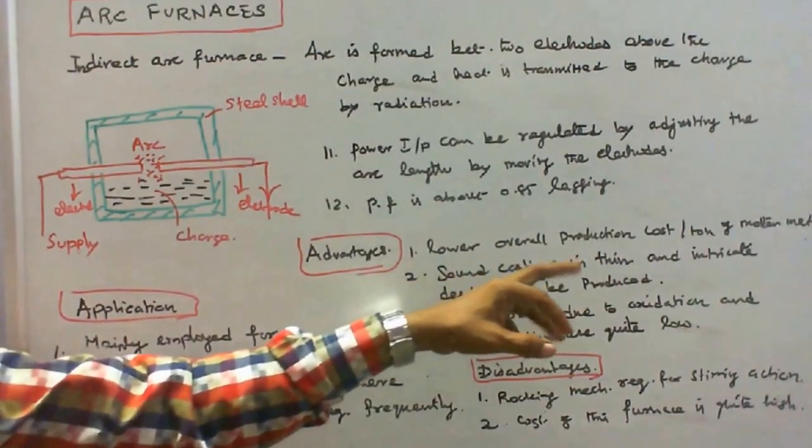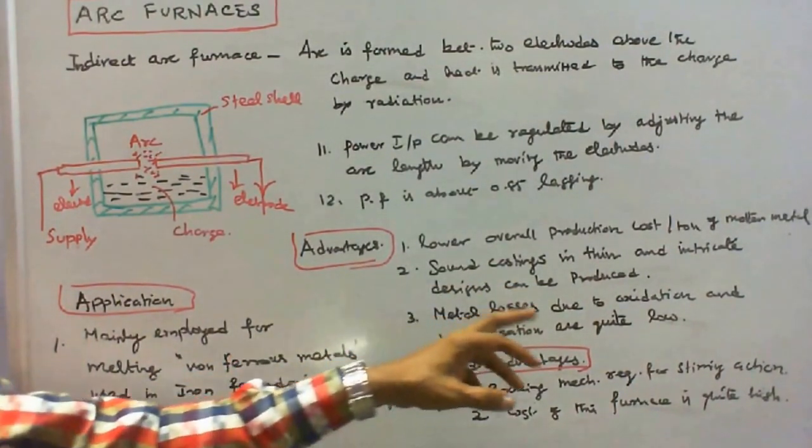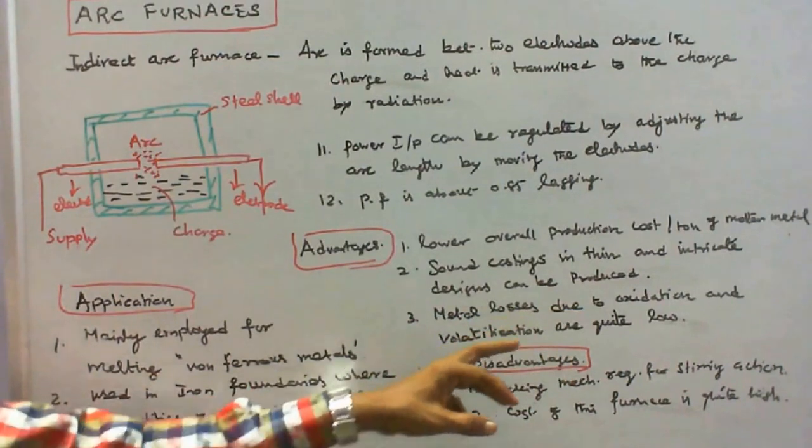Lower overall production cost per ton of molten metal. Sound castings in thin and intricate designs can be produced. Metal losses due to oxidation and volatilization are quite low.